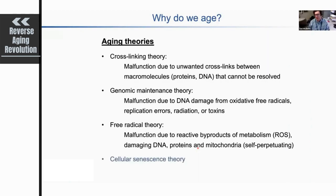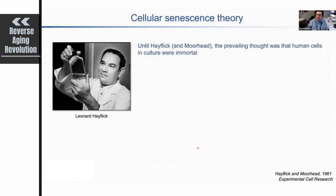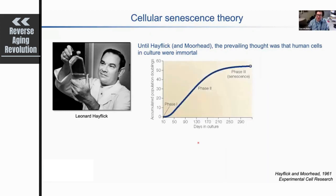What I'll focus on for my talk is the cellular senescence theory of aging. The senescence theory is actually a relatively young idea — about 60 years ago, Leonard Hayflick, working with Paul Moorhead, was trying to culture human fibroblasts. At the time, the prevailing idea was that human fibroblasts were immortal and would grow forever in culture.